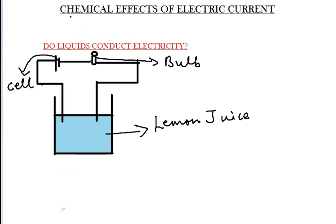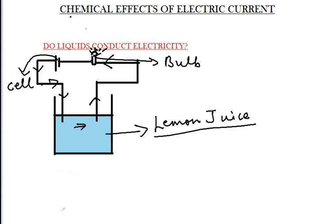Our next topic is: do liquids conduct electricity? For this we have a setup containing lemon juice, a bulb and a cell. Now we close the circuit and we can see that the bulb will start glowing. It is the current that flows through the cell, and because the lemon juice is conducting, it flows through the lemon juice and reaches the bulb, making it glow.